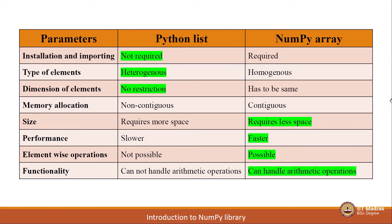Next point, size. As we have seen earlier, Python list requires more memory — it requires more bytes of memory to store some n number of elements. On the other hand, in order to store those same n number of elements, NumPy array takes less space. Next parameter is performance, and NumPy arrays are faster than Python lists.